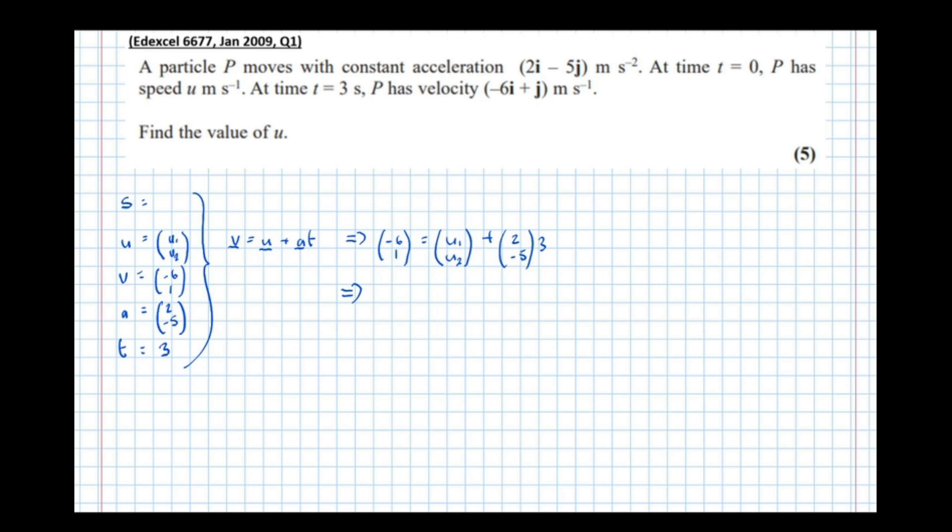Simplifying this: (-6, 1) = (u₁, u₂) plus—multiplying both by 3—3 lots of (2, -5) is (6, -15).